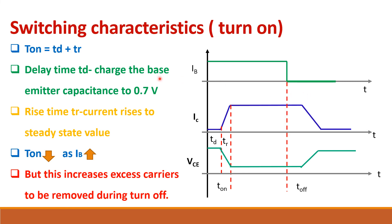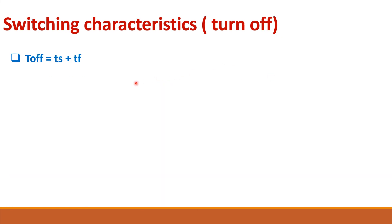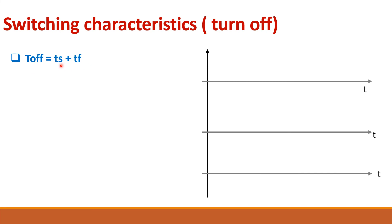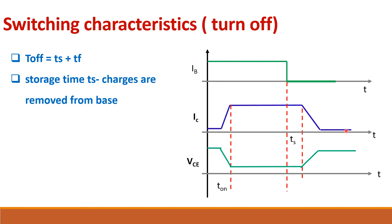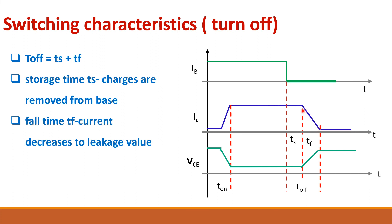The turn-off characteristics have two components: storage time and fall time. After the base current becomes zero, the collector current stays high for some time — during this storage time, charge carriers are removed from the base — and then it drops to the leakage value. That is the turn-off characteristic.